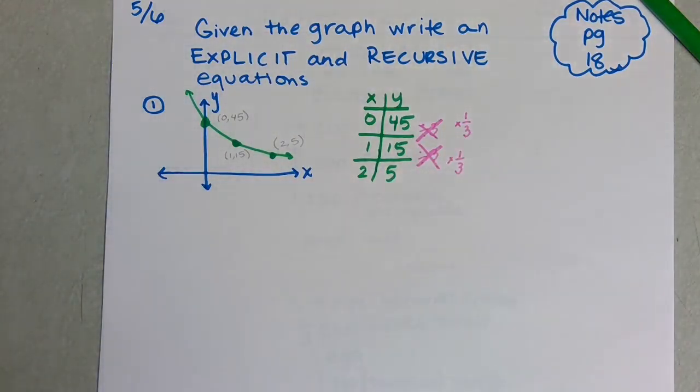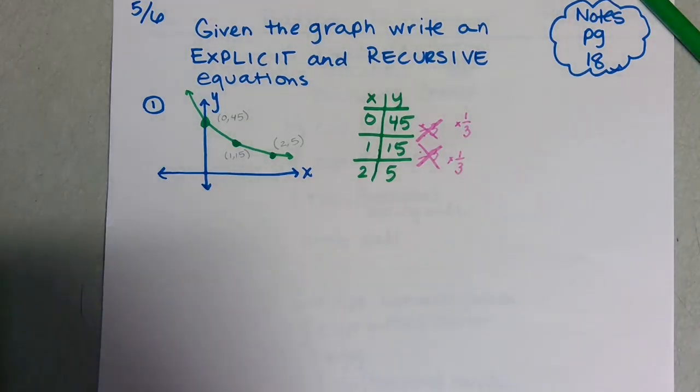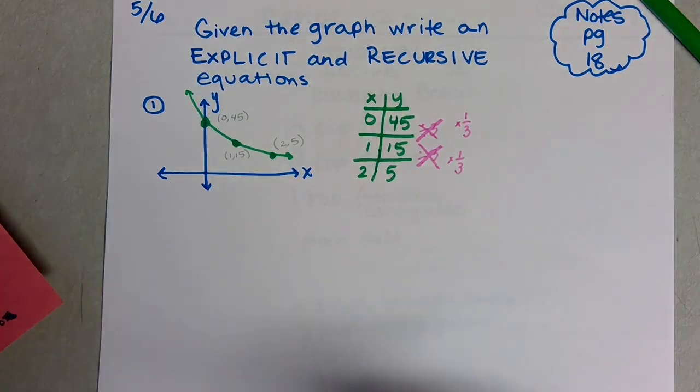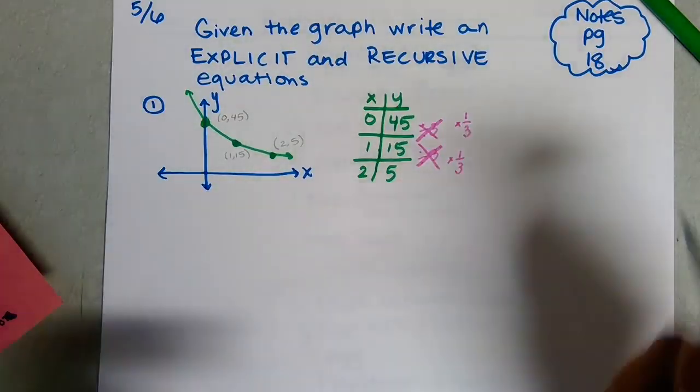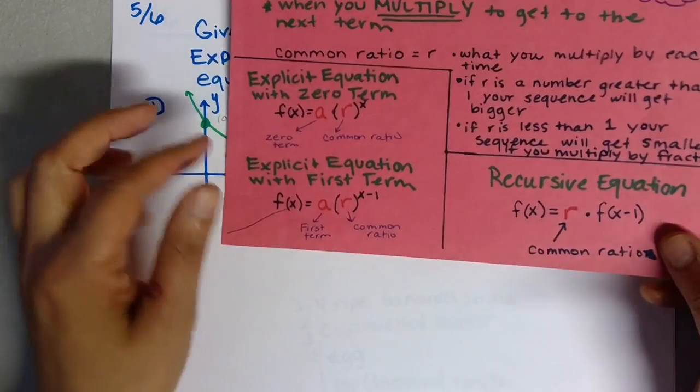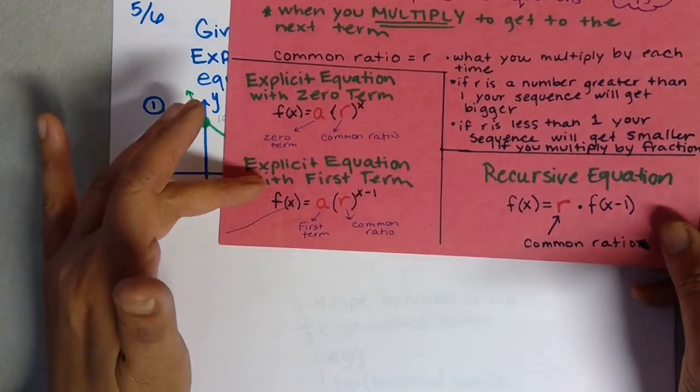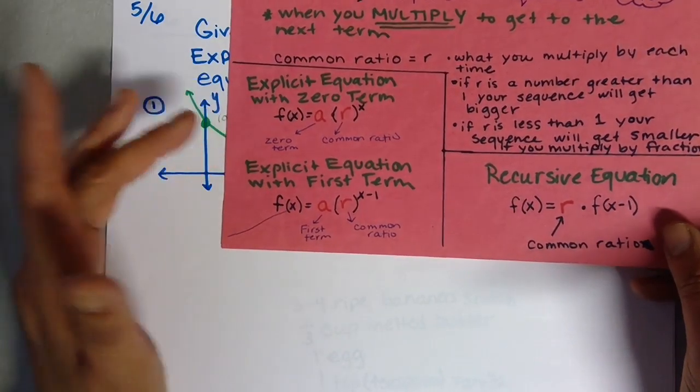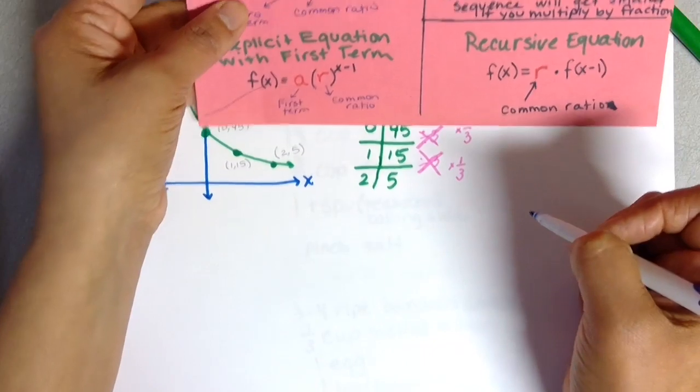I'm going to go to my explicit and recursive equations. For this case, my formula—the explicit equation—I have two choices: I can either use the zero term or the first term. It's very easy for me to use the zero term because I have that here.